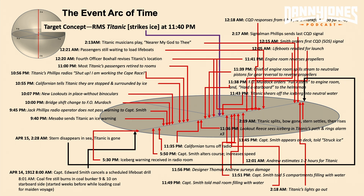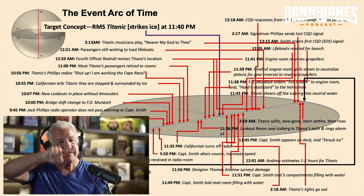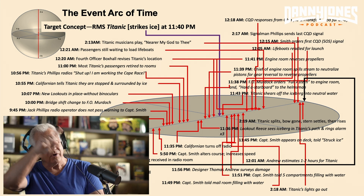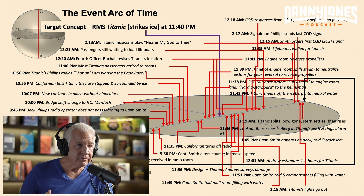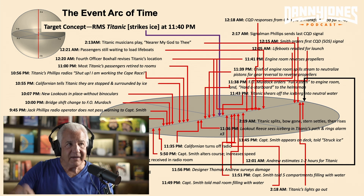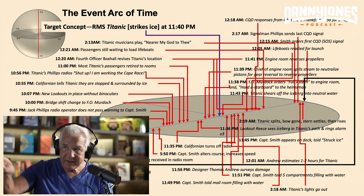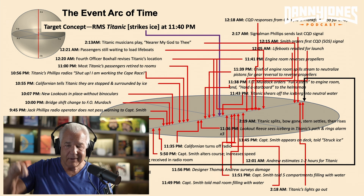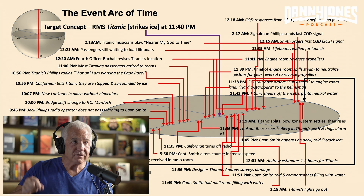The target concept for the RMS Titanic is locked at the exact moment it strikes ice at 11:40 PM on that date — you can see it going right down into the center of that Cartesian disc. But there is an event arc of time above and below the whole event, saying there are things that led up to that moment and things that imprinted after it. Before the actual event — the concept of the target striking ice at 11:40 PM — things led up to that, and things followed.